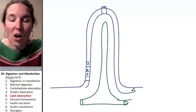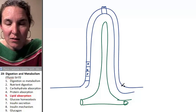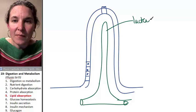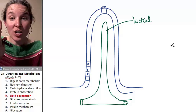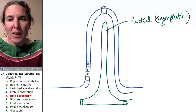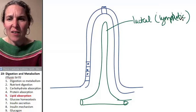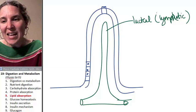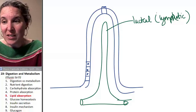The lacteals are found projecting up into the villus. The lacteal is actually a projection of lymphatic vessel. So the lymphatic tube projects up in here.